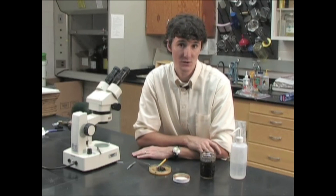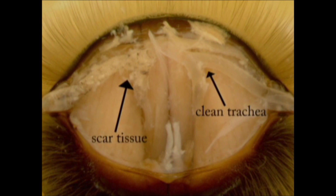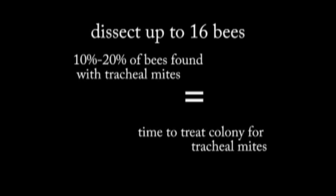It's important to distinguish these white globules from fat bodies also present in the thorax. At high infestations of tracheal mites, the mites cause scar tissue in the tracheal system, which looks black and can completely cover the trachea. I recommend dissecting up to 16 bees: if you find no tracheal mites in any of these samples, you have a 95% probability of having no tracheal mites in the colony. If your bees show a 10 to 20% infestation rate, you need to treat your bee colonies.